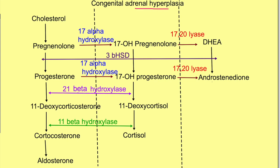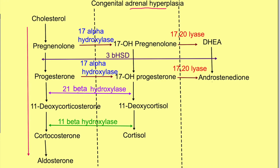Congenital adrenal hyperplasia results because of the deficiency of enzymes required in the synthesis pathway of various adrenal cortical hormones. This flow chart shows the pathway of synthesis of the various adrenal cortical hormones. Fundamentally there are three pathways: the first for synthesis of the mineralocorticoid aldosterone, the second for synthesis of glucocorticoids, and the third for synthesis of adrenal androgens.